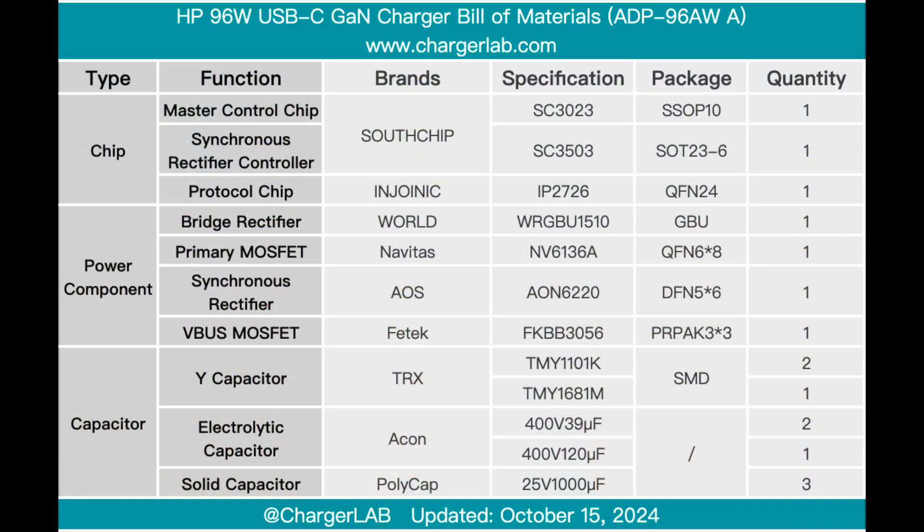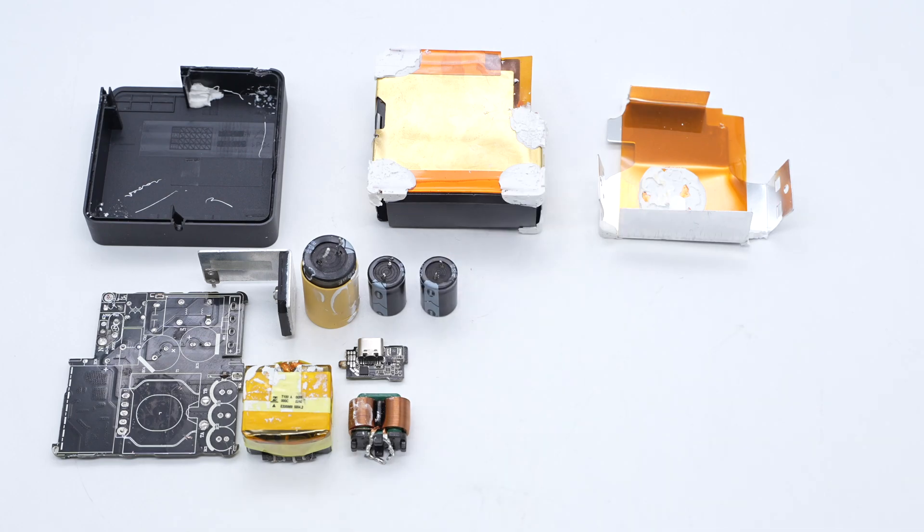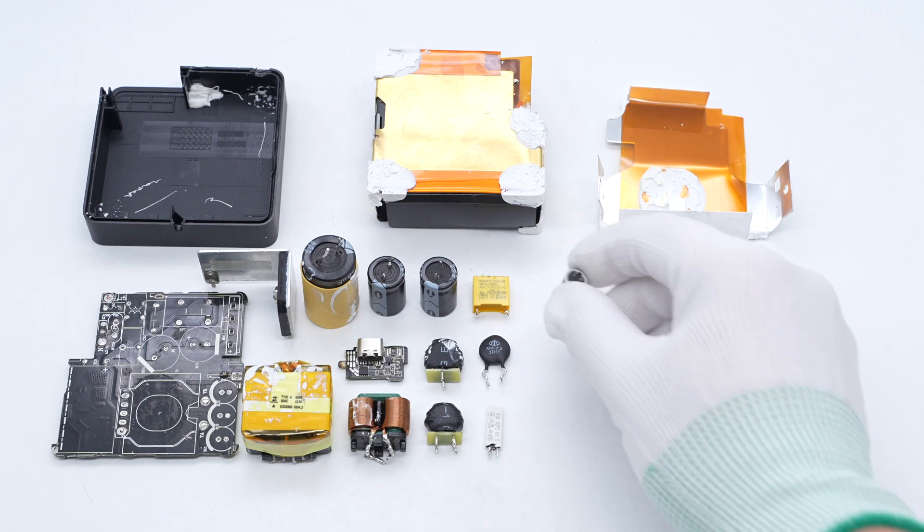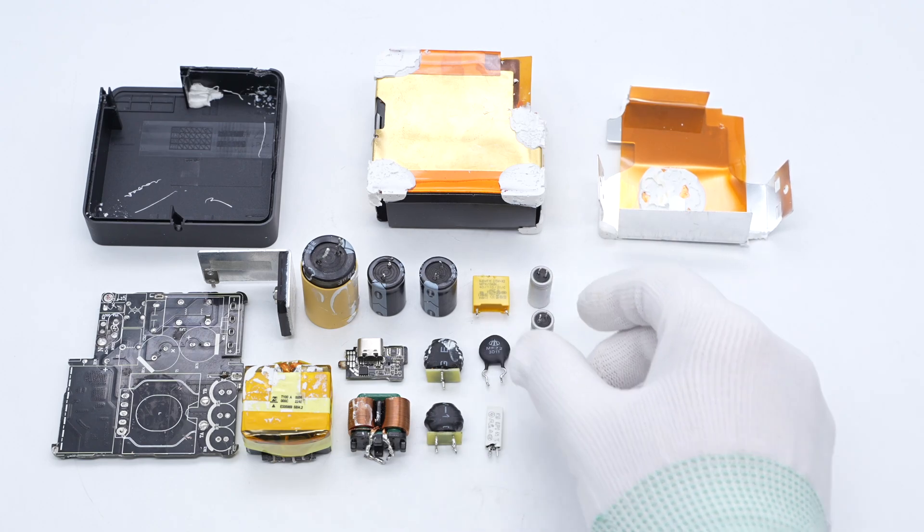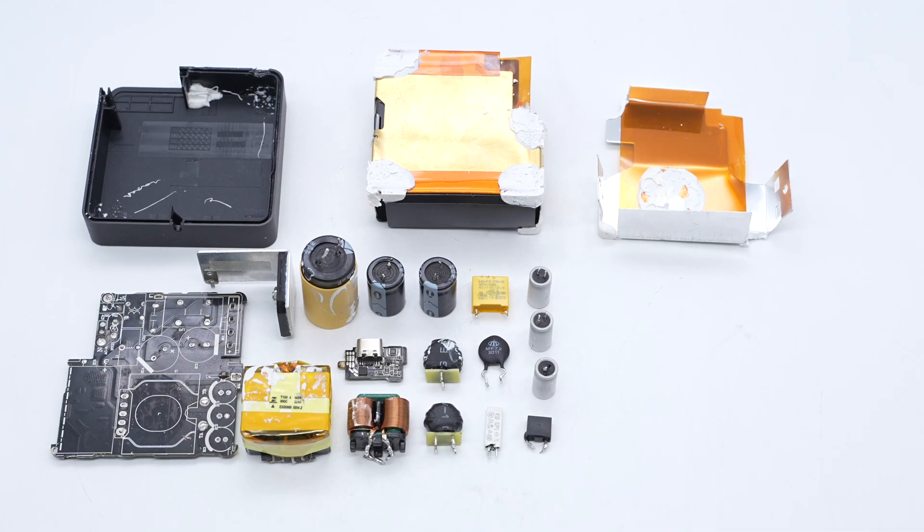Here is the component list of the HP 96 watt USB-C GaN charger for your convenience. Its shell is black with a matte design, equipped with a foldable plug and a USB-C port. After taking it apart, we found it adopts QR flyback topology. The main components it uses are from well-known brands. The gaps between components are reinforced with potting compound, and the PCBA module is covered with heat sinks. The workmanship is solid.